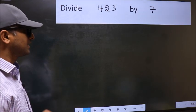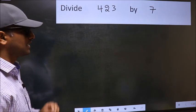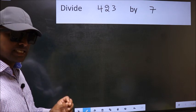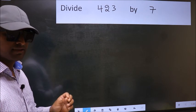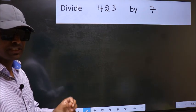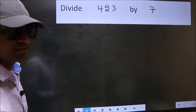Divide 423 by 7. While doing this division, many do this mistake. What is the mistake that they do? I will let you know. But before that, we should frame it in this way.